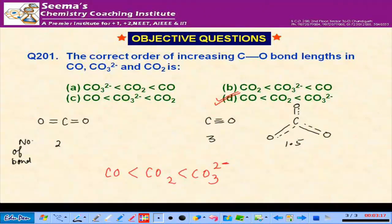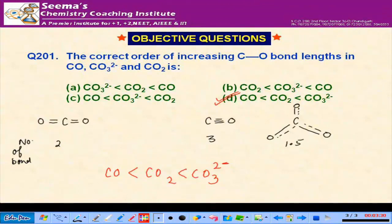Size of atom directly affects bond length — if size is more, atoms are farther apart, so bond length will be more. In carbon dioxide there is a double bond, in carbon monoxide there is a triple bond, and in carbonate due to resonance all bonds have 1.5 character.